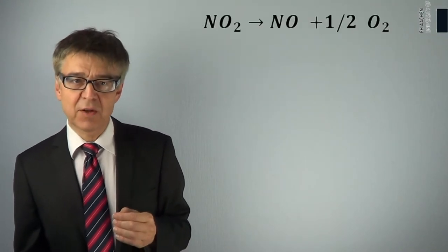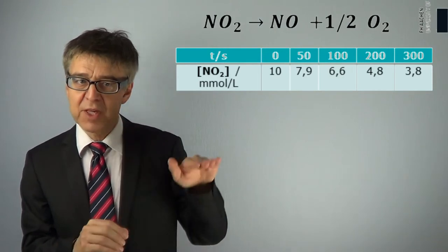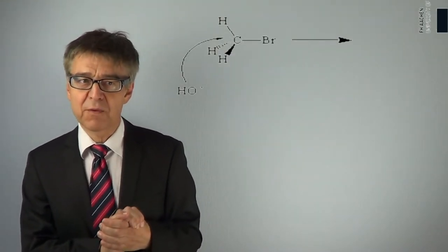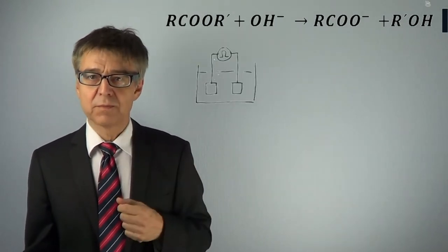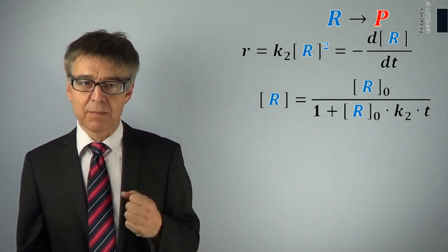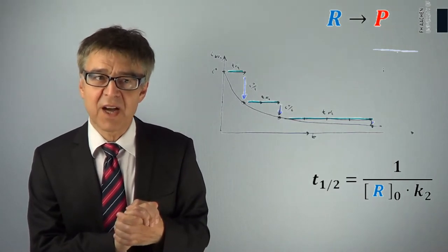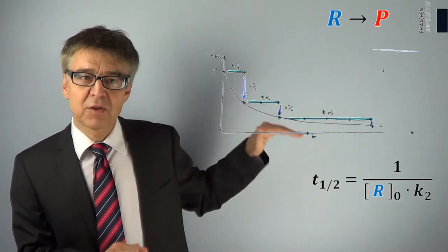The decomposition of NO2 is a second-order process. The rate is proportional to the concentration of NO2 squared. When the NO2 concentration drops to half, the rate will drop to a quarter. This nucleophilic substitution is first-order with respect to each of the reactants and second-order in total. The same applies for hydrolysis of esters — first-order with respect to acetate and hydroxide. If we have a simple second-order reaction and integrate the rate law, we obtain a relationship between reactant concentration and time. The half-life will thus increase as the reaction proceeds. R0 being the initial concentration, it takes twice as long from half of R0 to a quarter of R0 than from R0 to half of R0.